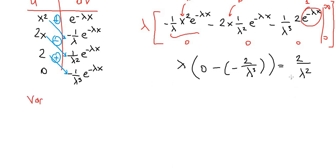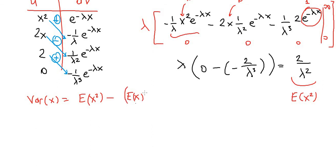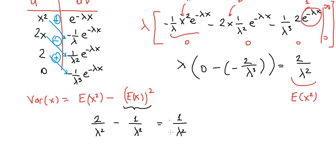So what we found is E[X²] = 2/λ². Now we can go back to the definition of variance: Var(X) = E[X²] − (E[X])² = 2/λ² − 1/λ² = 1/λ². So the variance of the exponential random variable is 1/λ².